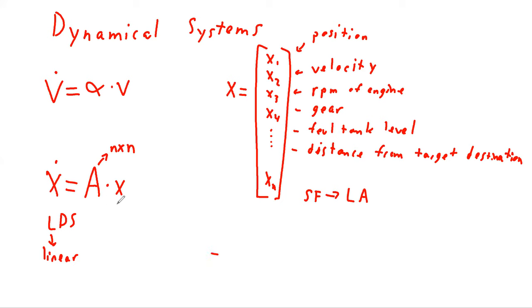Despite this constraint, linear dynamical systems are a class of equations that are extremely powerful in modeling a whole host of complex functions and complex systems. So that's it. That's the gist of a dynamical system.